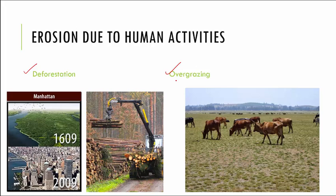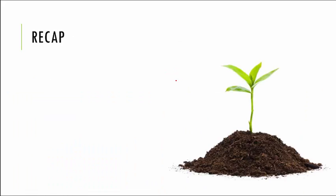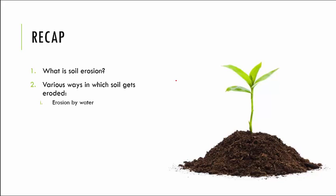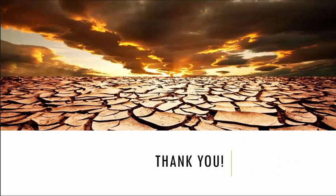With this, we come to the end of part one of this chapter. To recap: we saw what soil erosion is, then the various ways soil gets eroded — first by water, second by wind, and third by human activities such as deforestation and overgrazing. In the next part, we will discuss how we can conserve soil. If you have any doubts, please get back to us and we will answer them. Thank you.